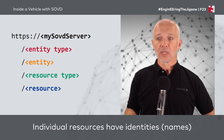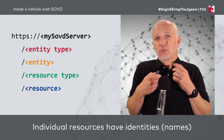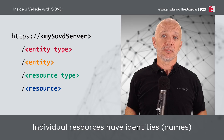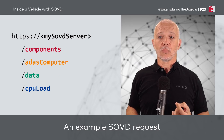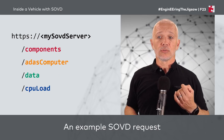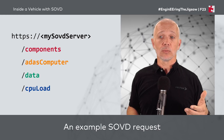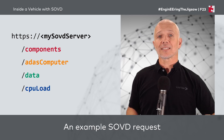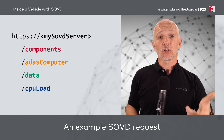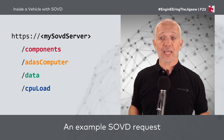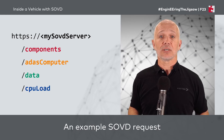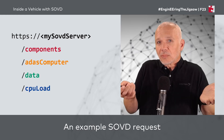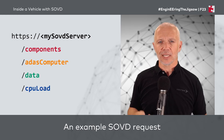Let's try and put this into an example. If we think about an example SOVD request, we might want to, among the components of a vehicle, talk to the ADAS computer, and from that ADAS computer, access the data that corresponds to the CPU load. That is an example of how an SOVD request could be structured. Of course, your SOVD server may present things slightly differently — certainly the names could be different.